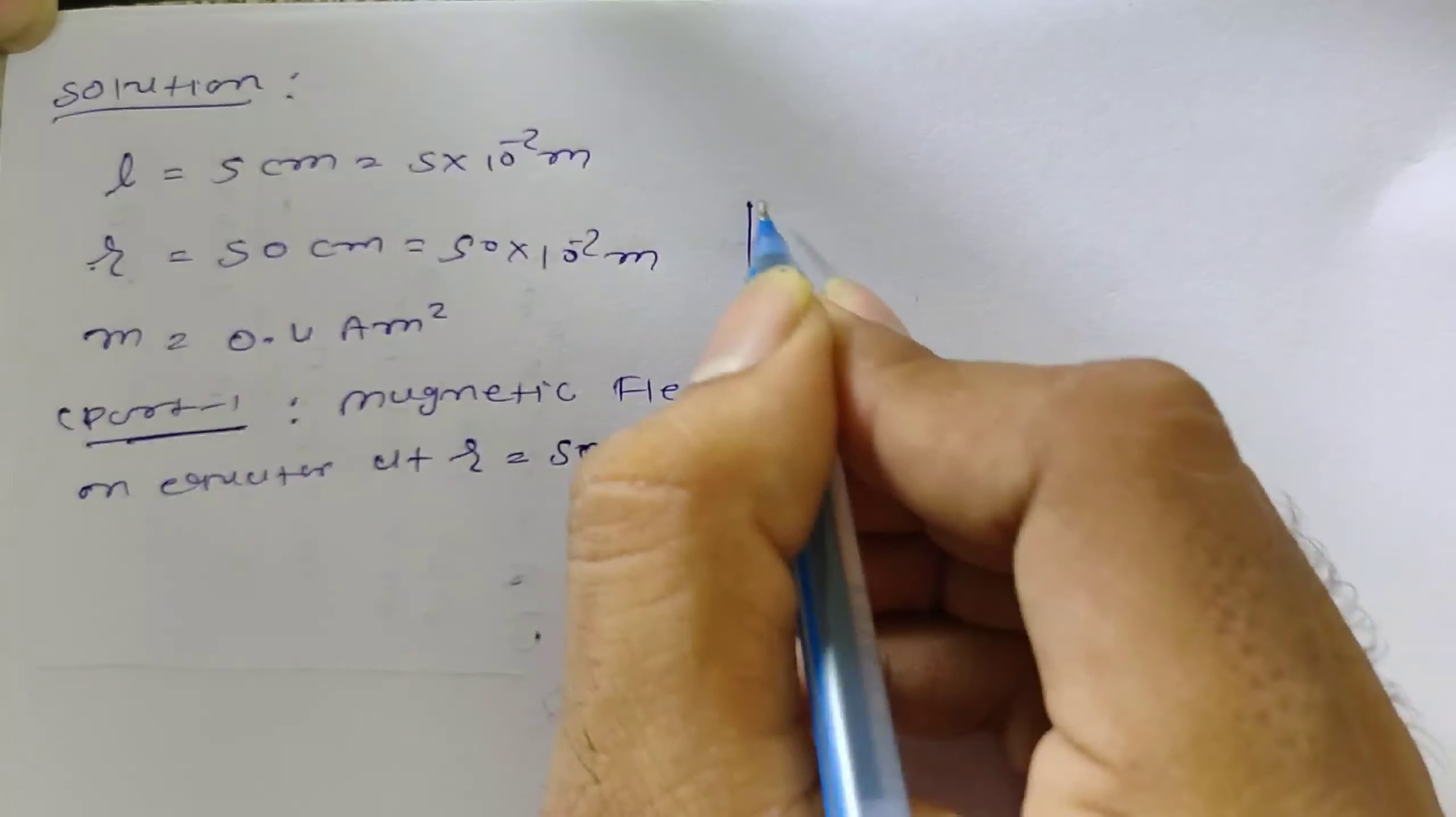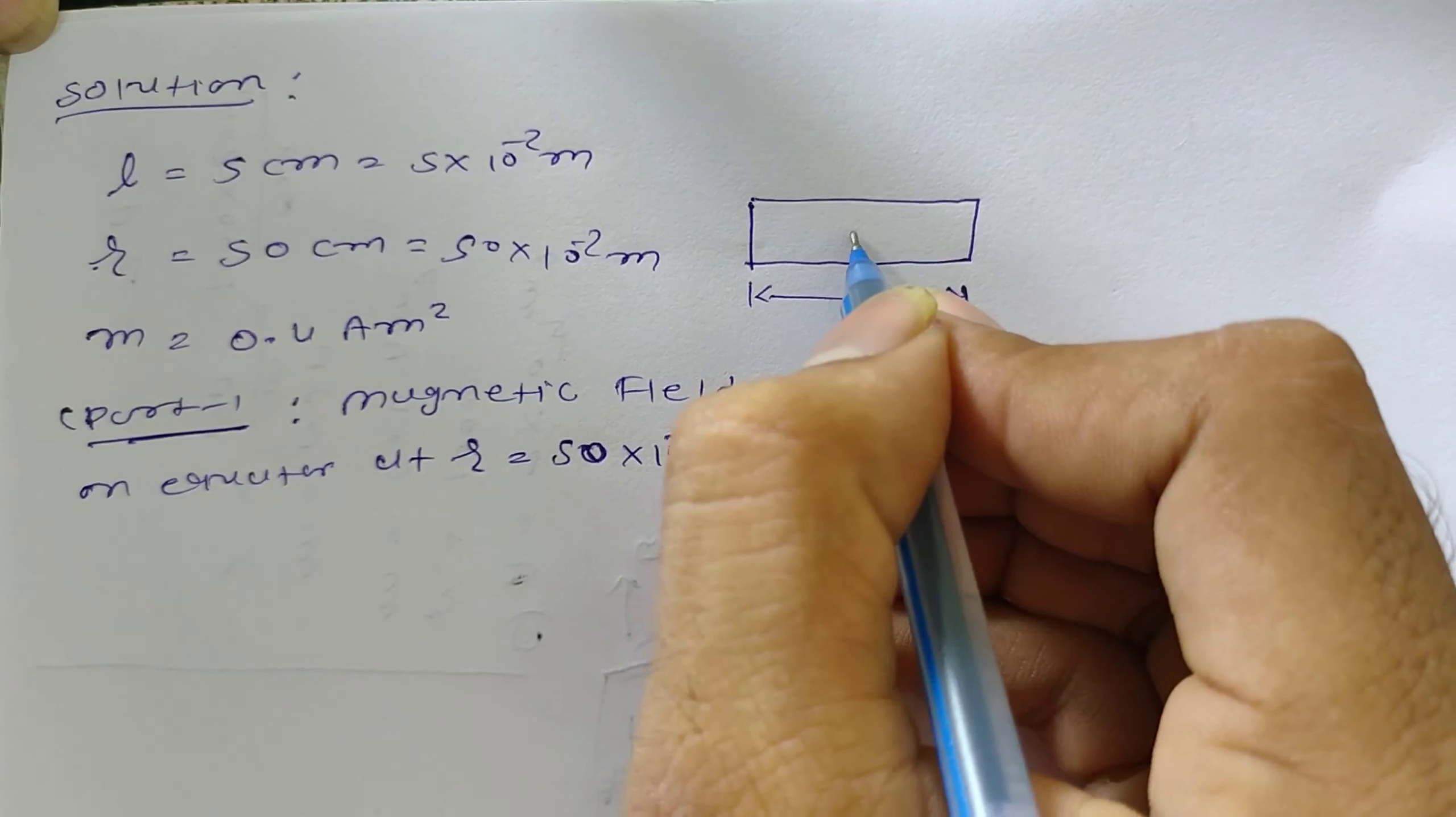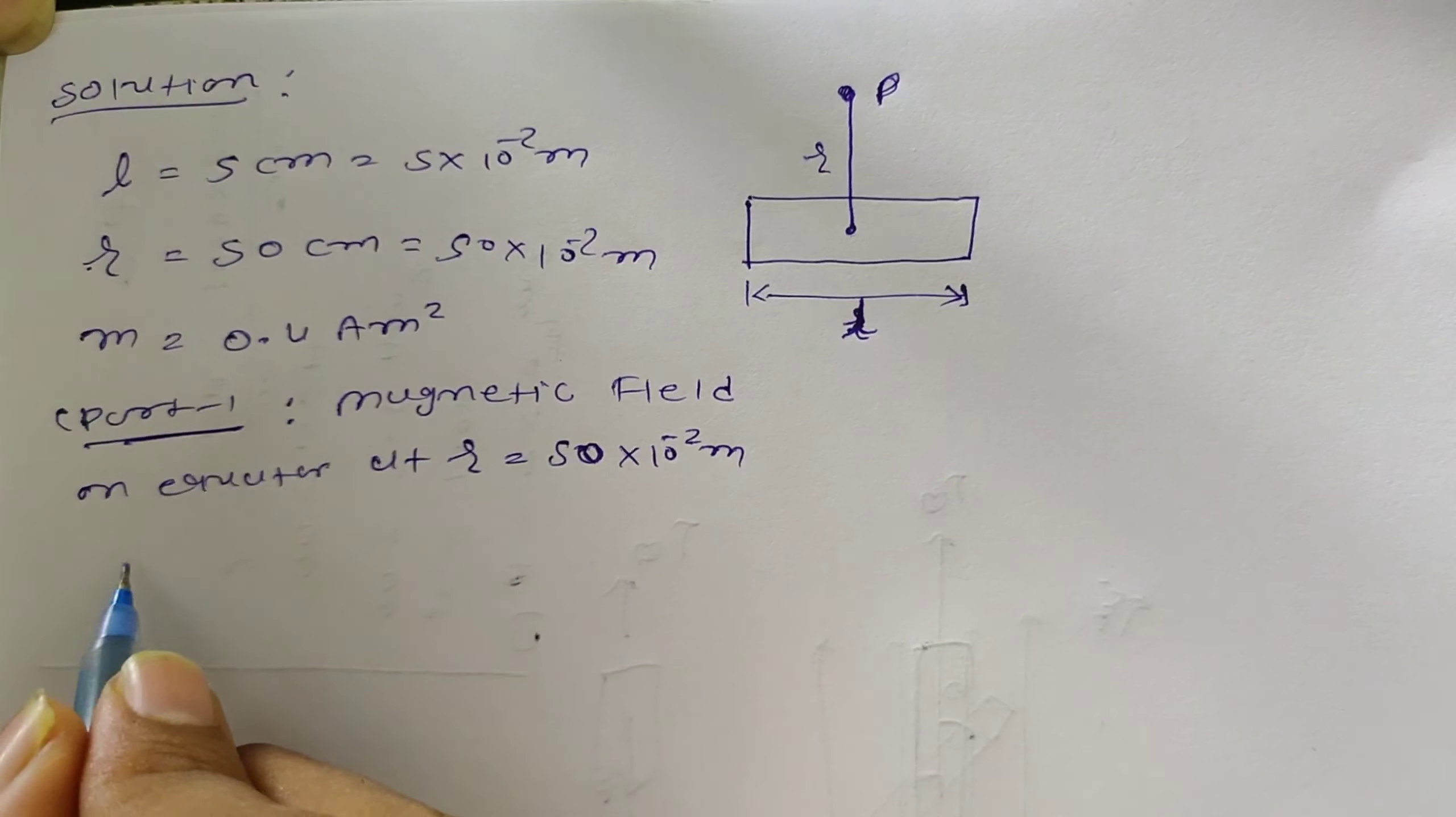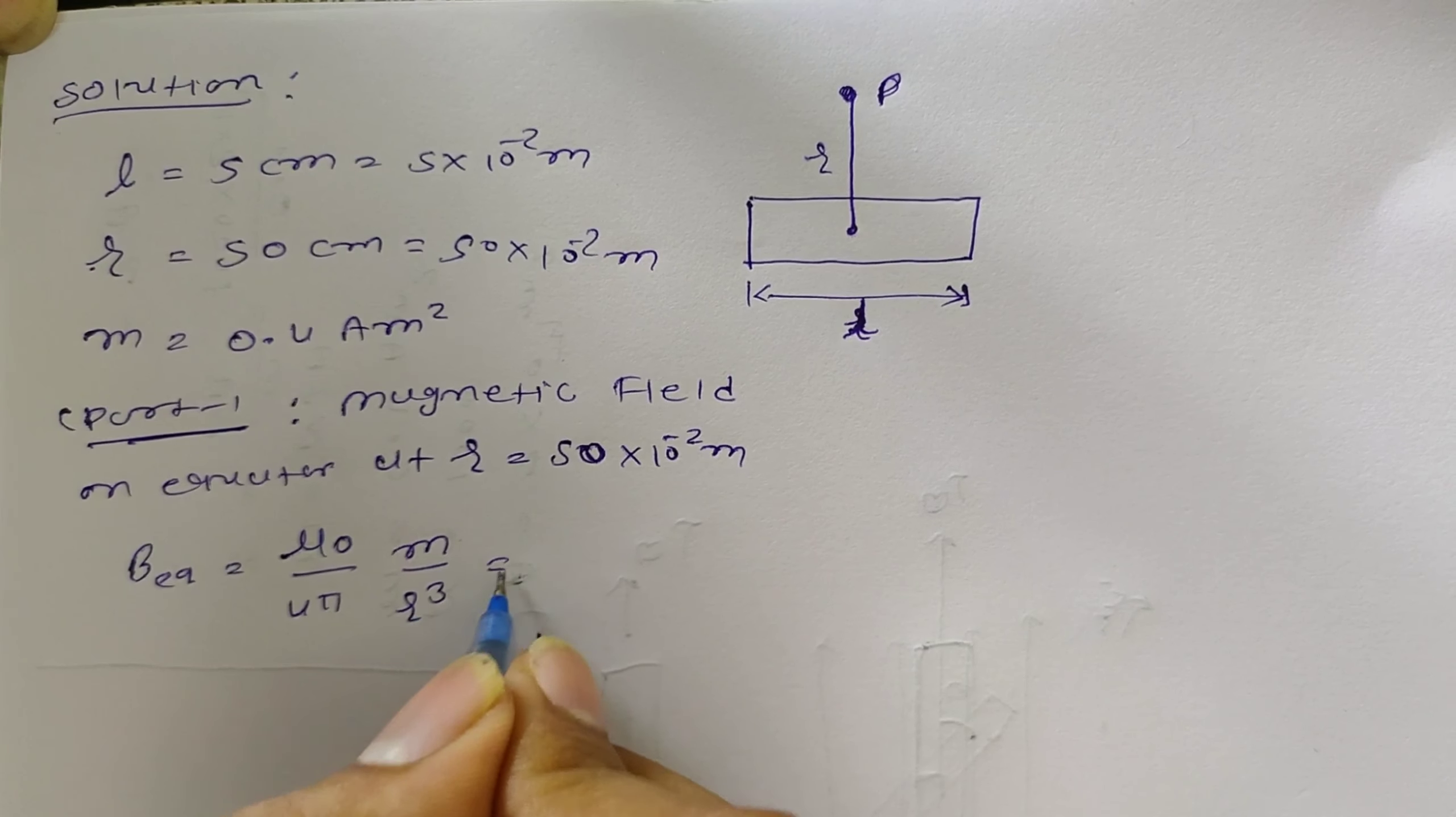If here I am drawing the bar magnet, its length is L. And we have to find magnetic field on its equator at any point P. Point P at distance R. So on equator, equation of magnetic field we have already learned that μ₀/4π × M/R³.